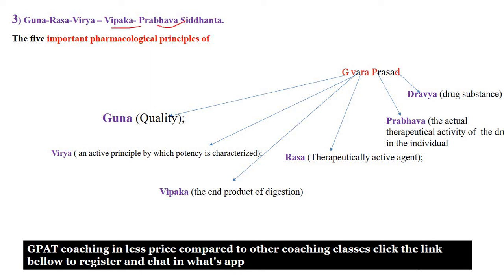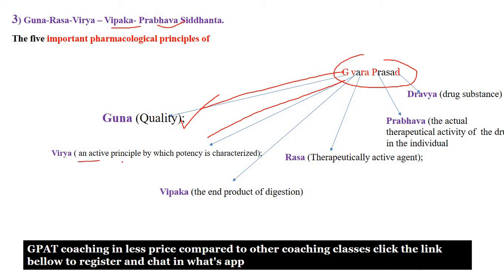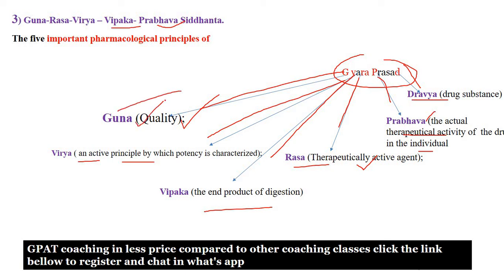To remember this, use the mnemonic 'G Varpasad': G means Guna — quality; V means Virya — active principle or potency of the drug; V means Vipaka — end product of digestion; R means Rasa — therapeutically active ingredient; P means Prabhava — the actual therapeutic activity of the drug; and D means Dravya — drug substance. So Guna is quality, Virya is potency, Vipaka is the end product of digestion, Rasa is therapeutically active constituent, and Prabhava is the therapeutic activity of the drug.